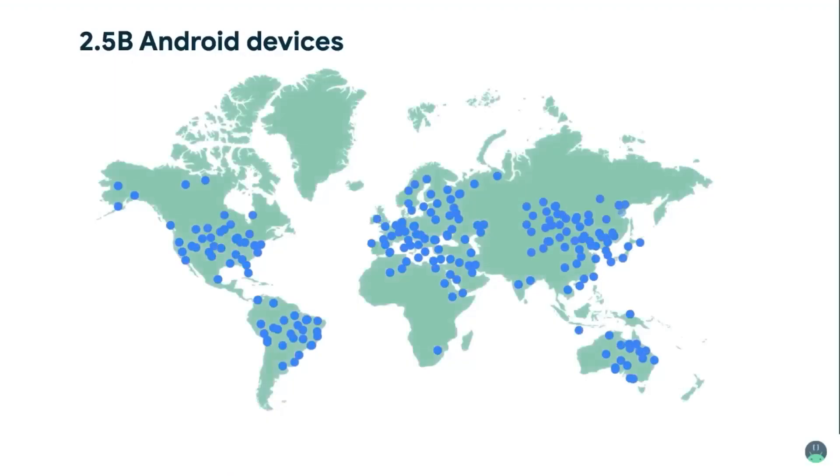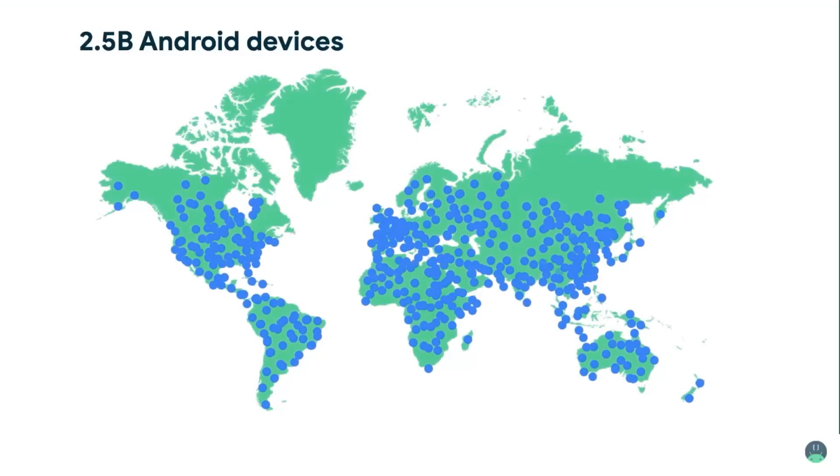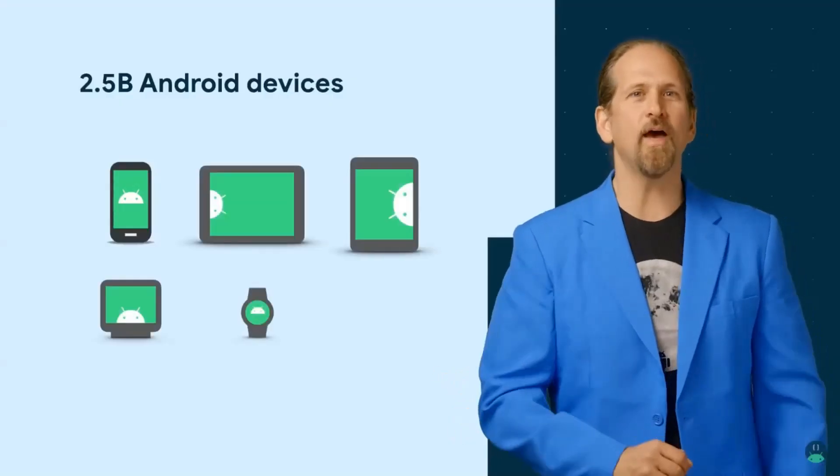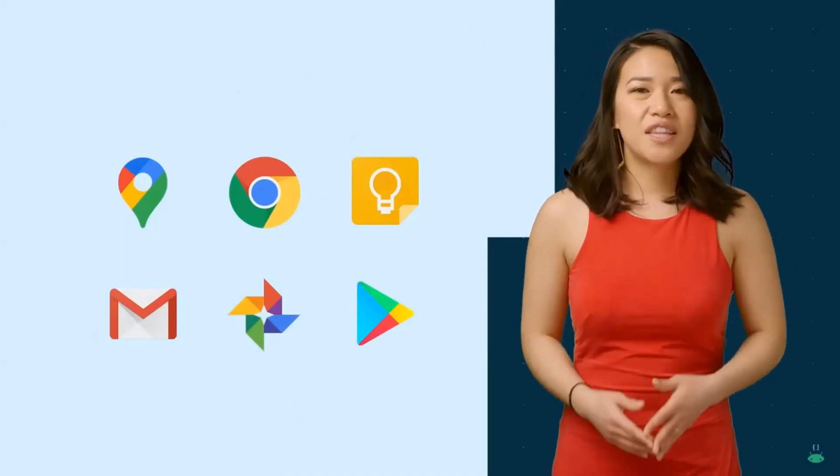It honestly feels like a superpower to know how to build an app — to take something that's an idea in your head and put it on your phone. And it's not just your phone. There are over 2.5 billion Android devices in the world — phones, tablets, TVs, watches, and even cars. All the engineers working on complex apps had to start at the beginning. In this course, we're going to focus on building a series of basic Android apps that can run on a phone.